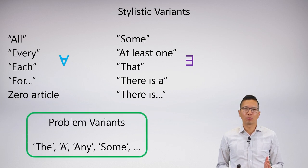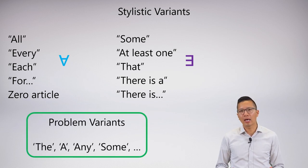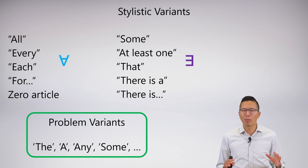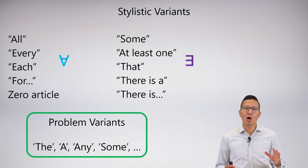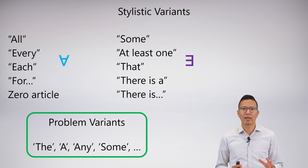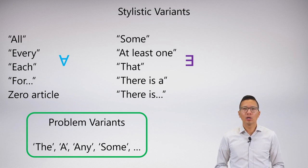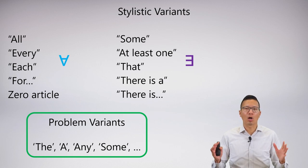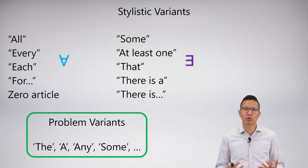Unfortunately, there are some problem variants. It turns out 'the', 'a', 'any', and even 'some' are sort of problematic in some ways. I'm not going to go over how they're problematic in this video. We'll have one later on in this unit which talks a bit about the problems and oddities of the English language in relation to the stylistic variants.